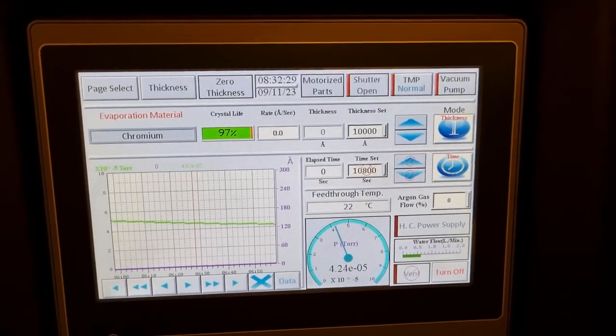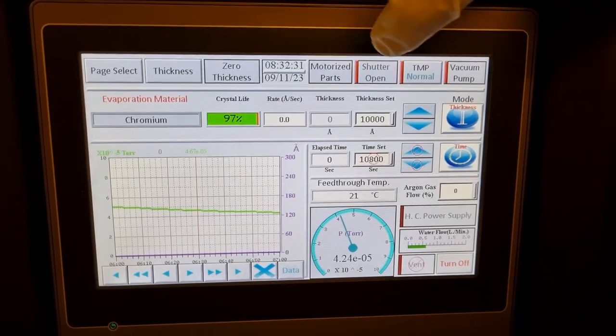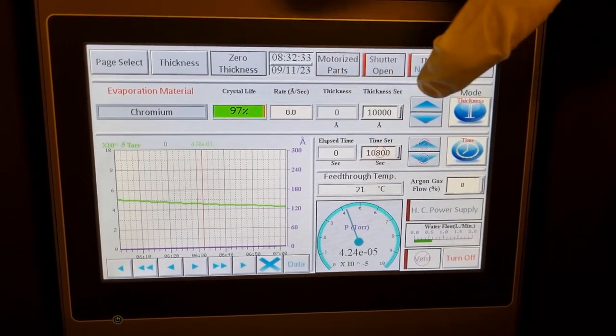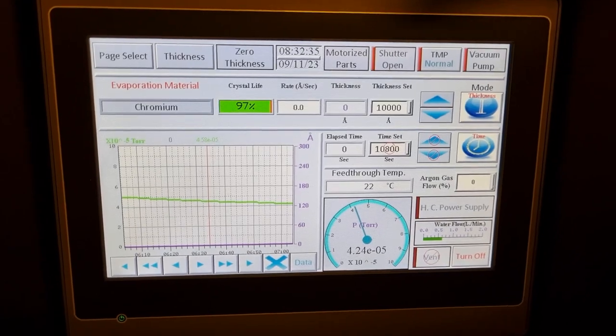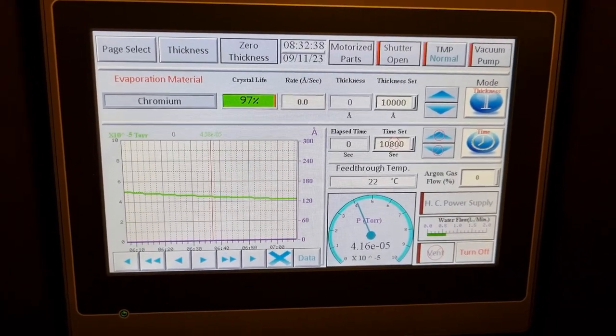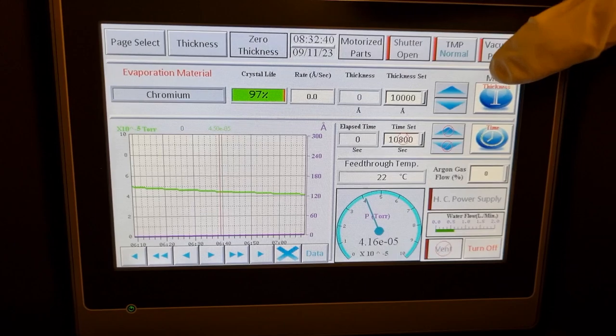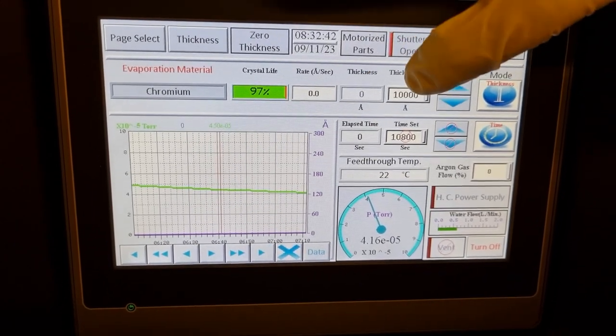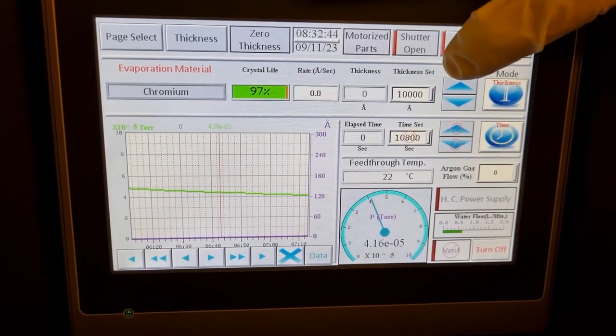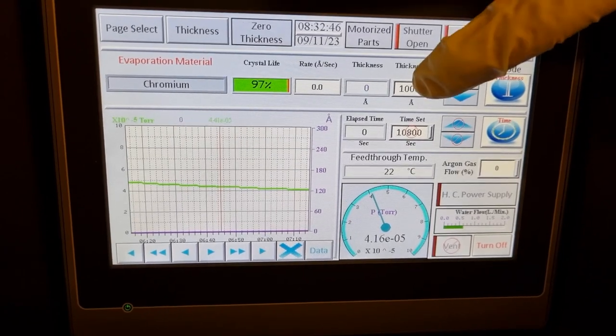While we're waiting for the pressure to get to 2 times 10 to the minus 5 torr, we can set up the last part of our operation process. So we'll put the system into a thickness mode. That will cause the system to stop current to the power supply after a certain amount of thickness is reached on the monitor.